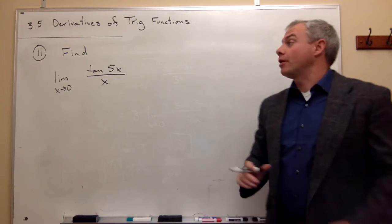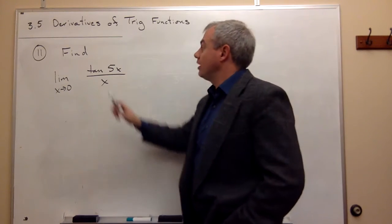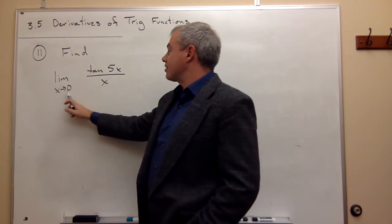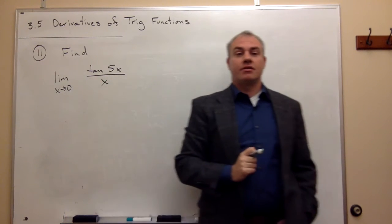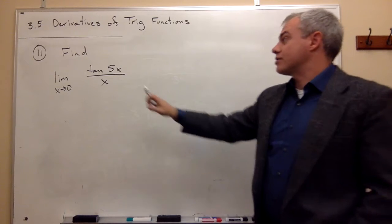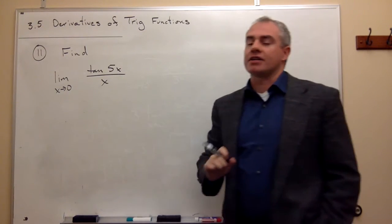Okay, now let's look at problem number 11. In problem 11, I'd like to find the limit as x goes to 0 of tangent of 5x divided by x. So limit as x goes to 0, tangent of 5x over x.